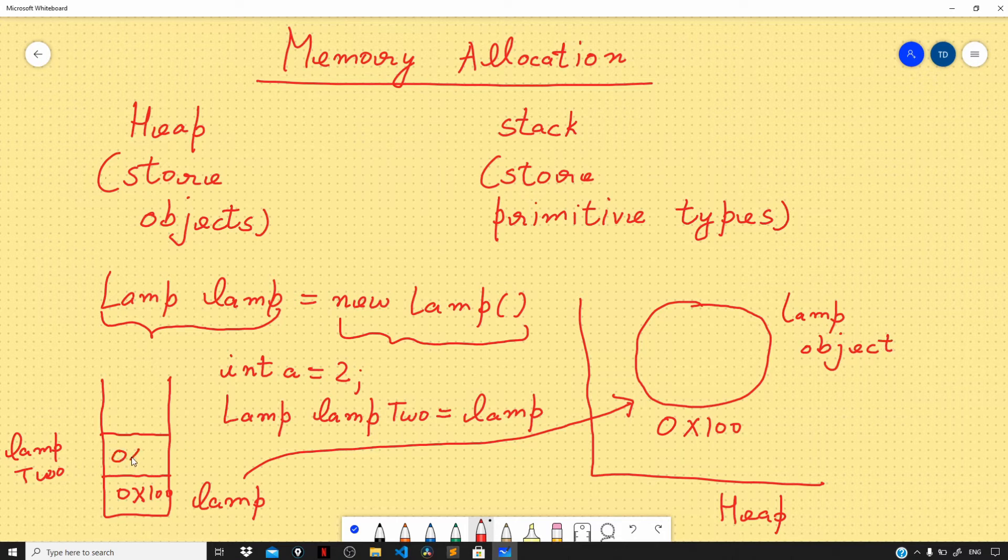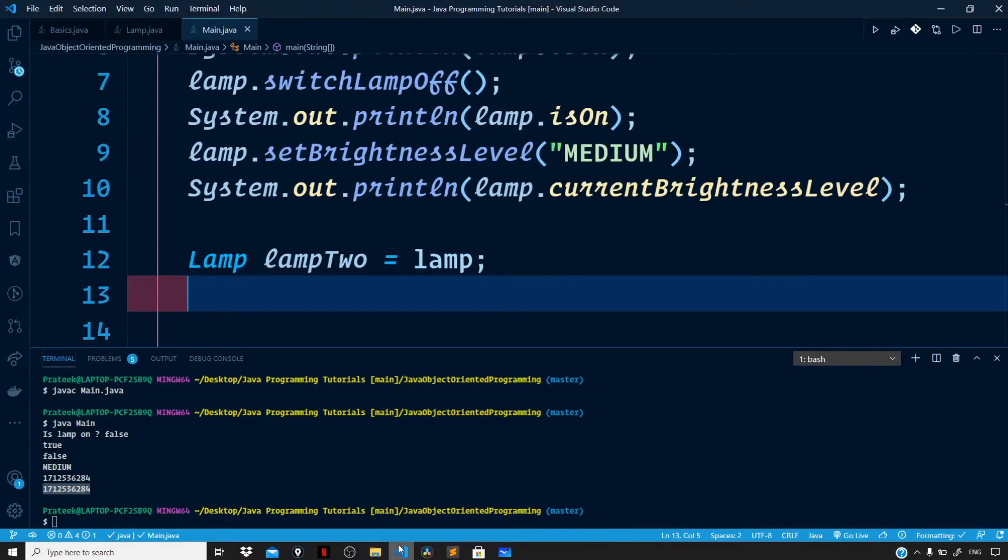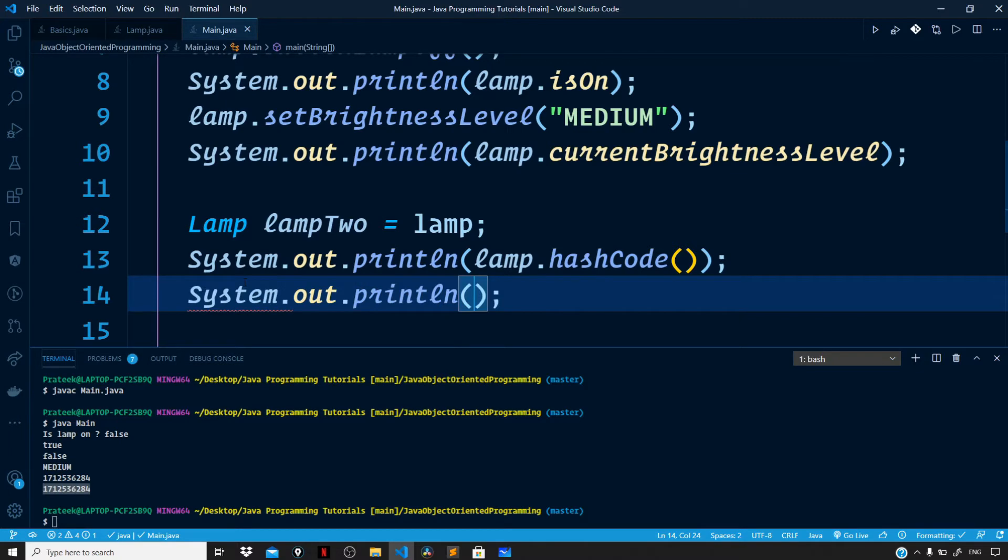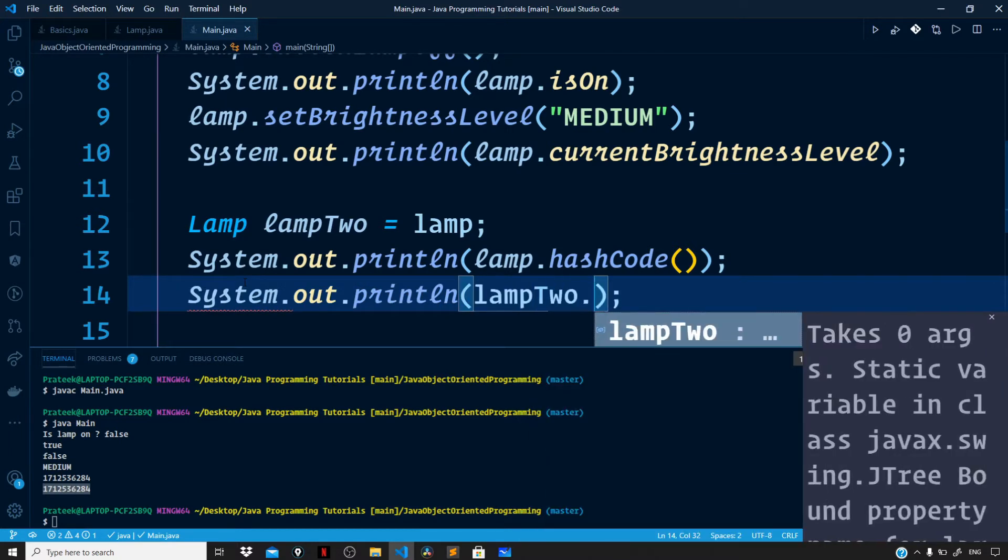Here on the stack we will have a new reference lamp2 variable, and this also holds the memory location of the object that is stored on the heap, which is our lamp object. So here also we will have 0x100. To verify that, let's print the hash code of both our references: System.out.println lamp.hashCode and then another println lamp2.hashCode.